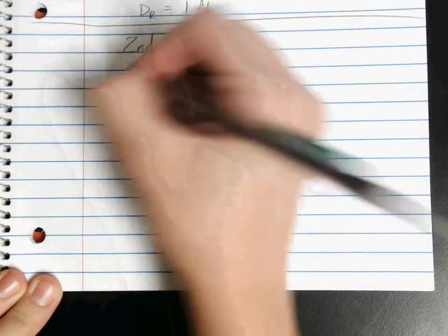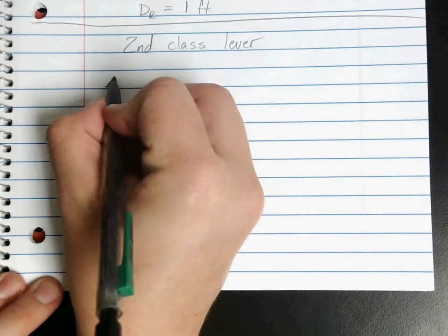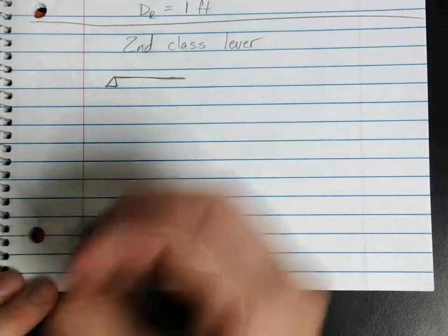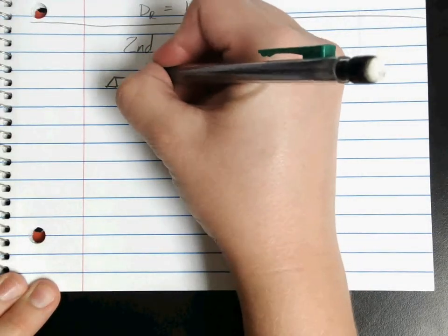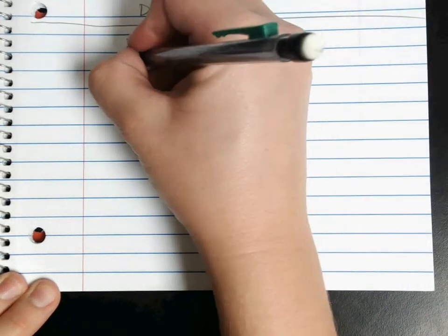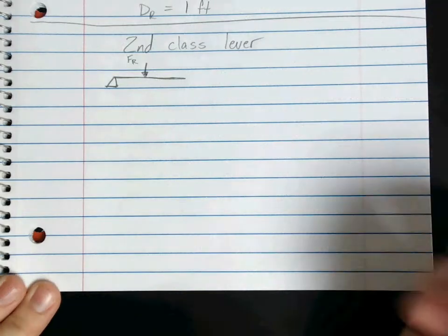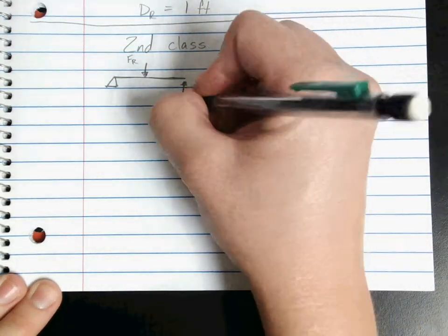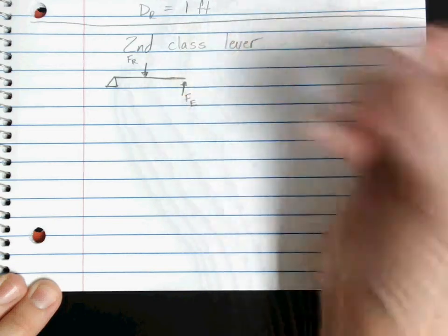So for our wheelbarrow, we're going to have our fulcrum at one side, the rest of our lever going in the next direction. We have our resistance in the middle, so this is our FR, and our effort will be at the end, so this is our FE.